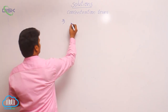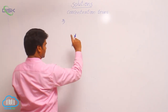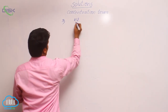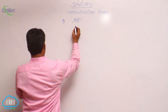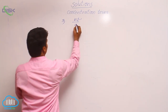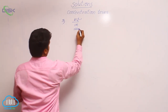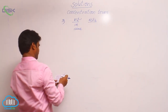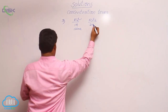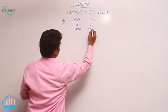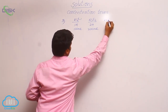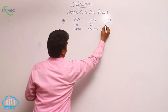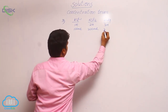Here, three HCl solutions are given. HCl 1: 1 molar and 100 ml. Similarly, HCl 2, the second solution of HCl, is 2 molar and 200 ml. The third part, HCl 3, is 3 molar and 300 ml solution.